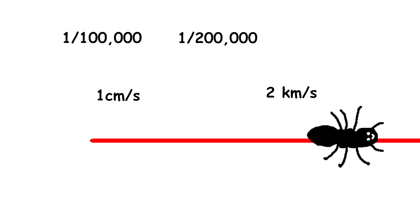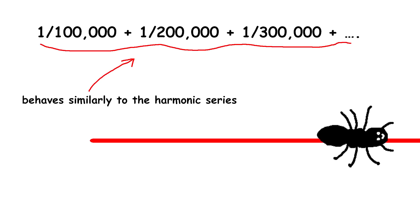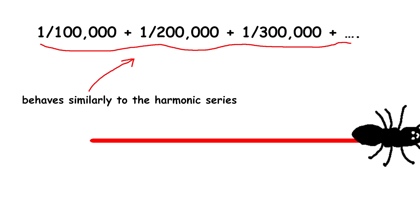If you sum up all these fractions over time, it forms a series. This series is known as the harmonic series, and it actually diverges into infinity. This means that no matter how large the rope stretches each second, the sums of these fractions will eventually exceed one, ensuring that the ant will reach the end of the rope.